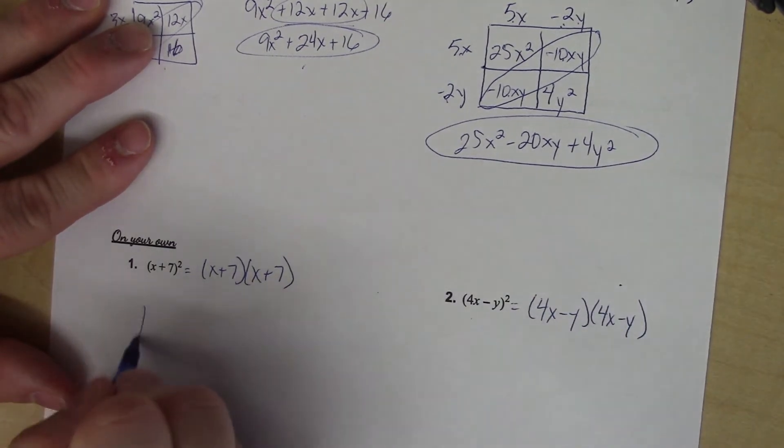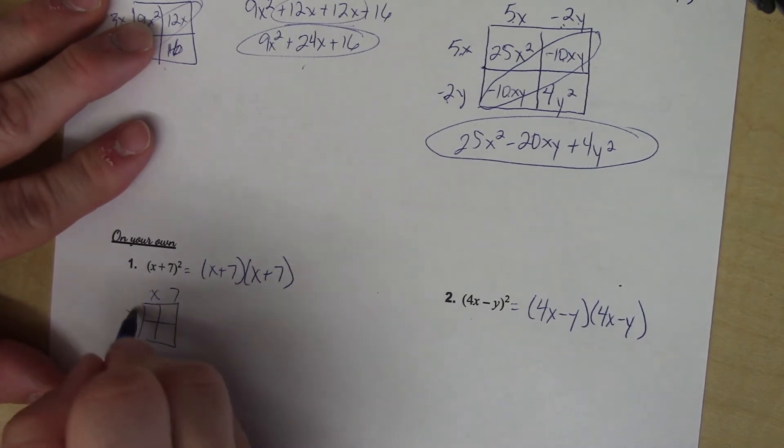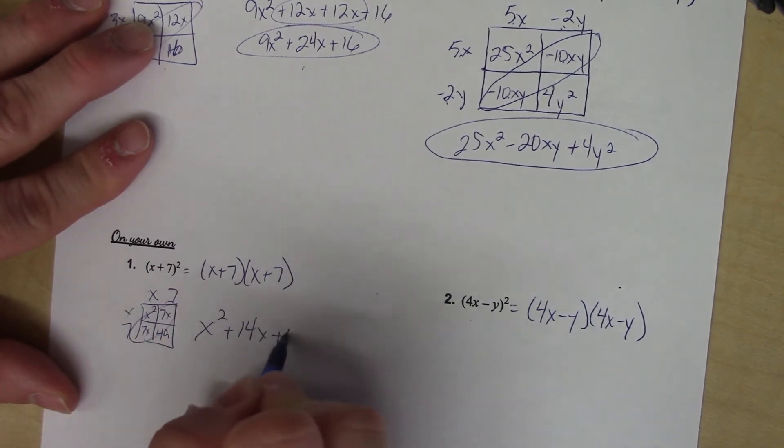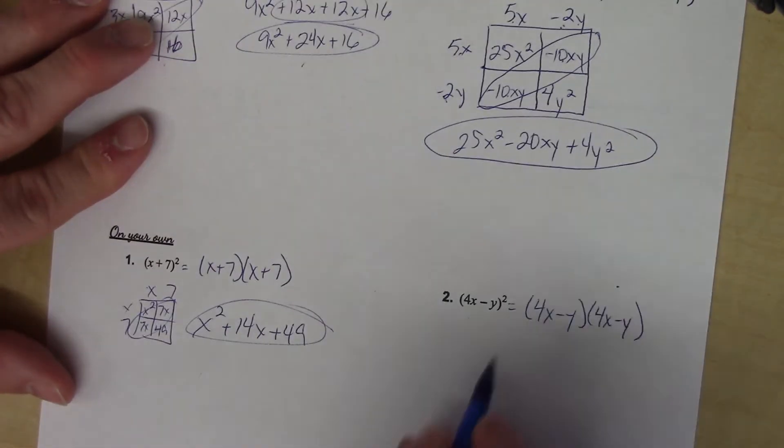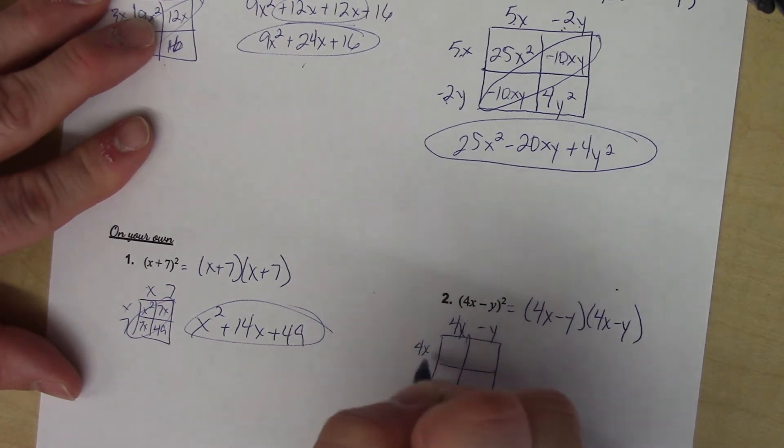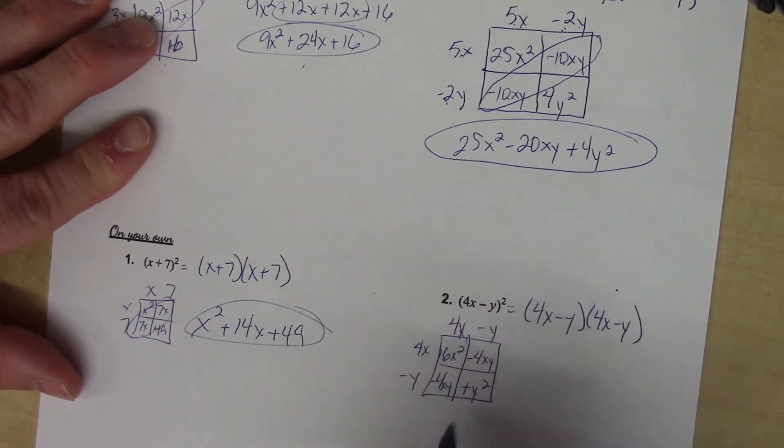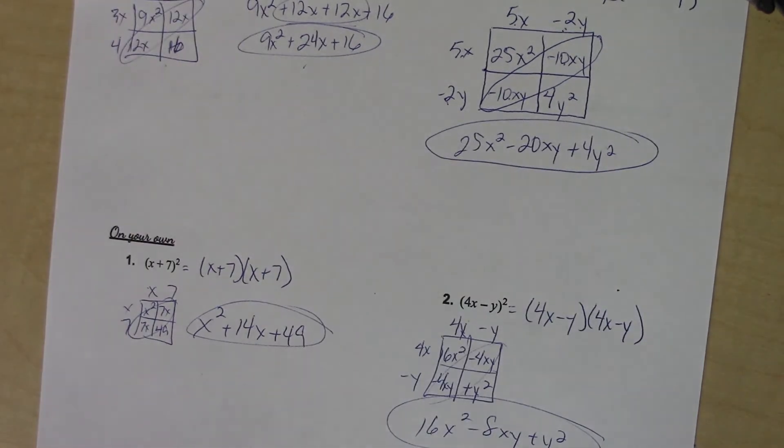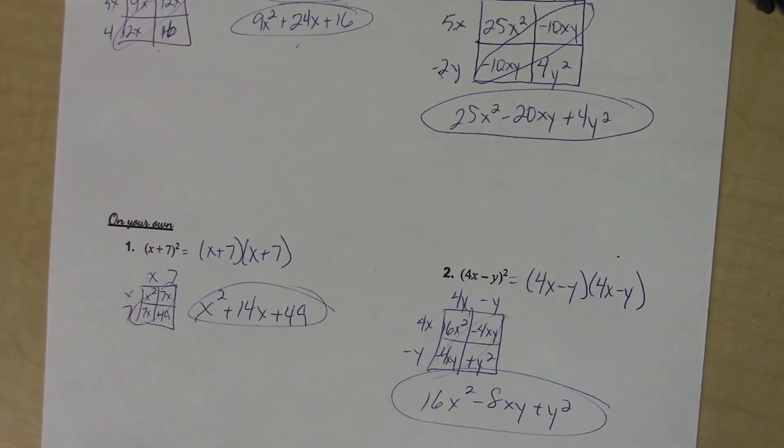Okay, I'm just going to use the box method for both because I think it's faster. (x + 7)(x + 7): x², 7x, 7x, and 49. These two added together gives me x² + 14x + 49, that is the answer. Over here, (4x - y)(4x - y) gives me 16x² - 4xy - 4xy + y². Add on the diagonal: 16x² - 8xy + y². It looks a lot like that other problem above it.